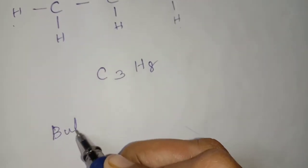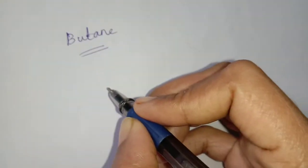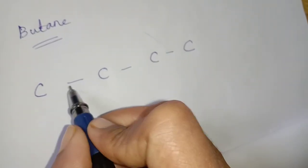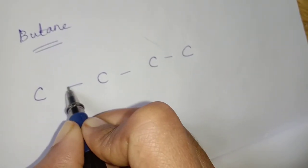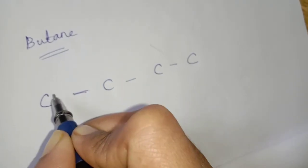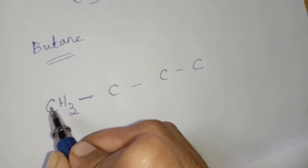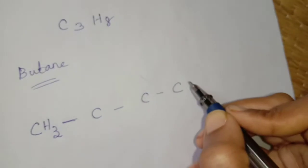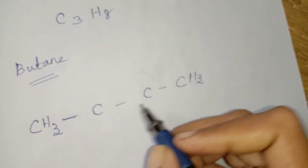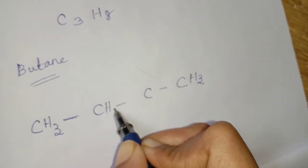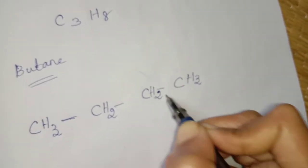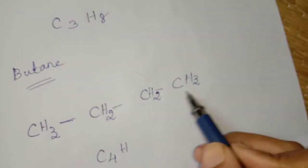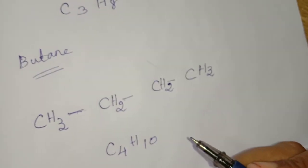Next one is butane. Butane means how many carbon atoms have to be present? 4 carbon atoms — 1, 2, 3, 4. The end carbons each have 1 bond used, so balance CH3. The two middle carbons each have 2 bonds used, so balance CH2. Counting total hydrogen: 3, 4, 5, 6, 7, 8, 9, 10. So C4H10 is the formula for butane.